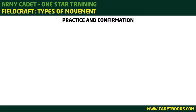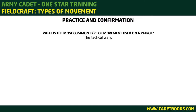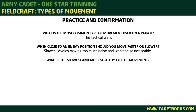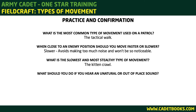Practice and confirmation. What is the most common type of movement used on a patrol? The tactical walk. When close to an enemy position, should you move faster or slower? Slower — it avoids making too much noise and won't be so noticeable. What is the slowest and most stealthy type of movement? The kitten crawl. What should you do if you hear an unnatural or out of place sound? Stop, look, listen, and if possible take cover.